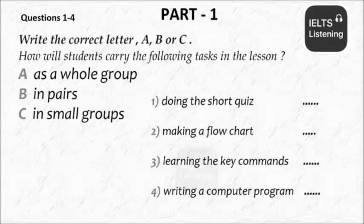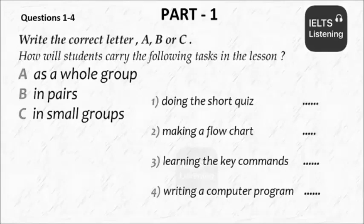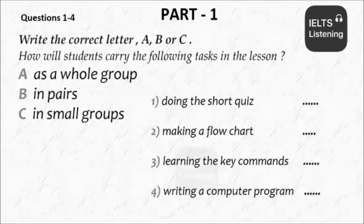Then they use that to write their computer program. Actually, I think there's a stage before that. The flowchart will be in English. They're going to need to be taught a few basic commands so they can write their computer program. For example, when you want text to appear on the screen, the command is PRINT in capital letters, followed by the text you want to appear in double inverted commas. So they'll need to be taught five or six commands before they use them to write their program. Okay. So how shall we do that? With the teacher talking to the whole class again?